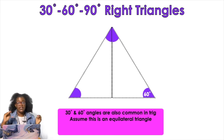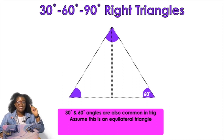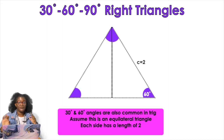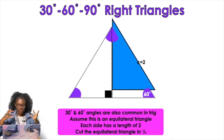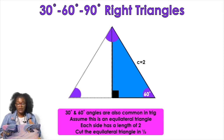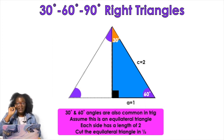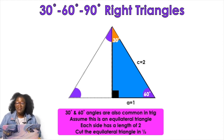All of those angles are equal to 60 degrees. We're going to assume each side of this equilateral triangle equals 2. Then we cut the equilateral triangle in half and focus on just the blue part. If I cut the bottom in half, that side goes from 2 to 1. And if I cut that top angle in half, instead of 60 it becomes 30. That's how you get a 30-60-90 right triangle.